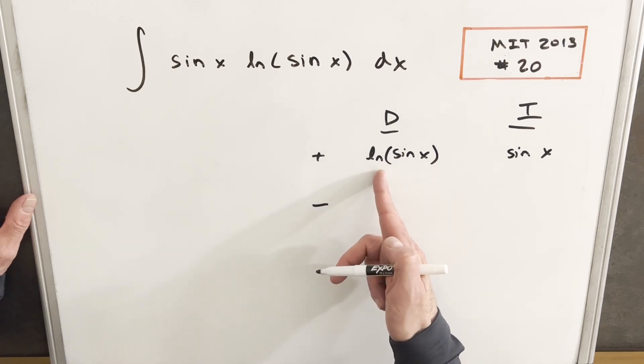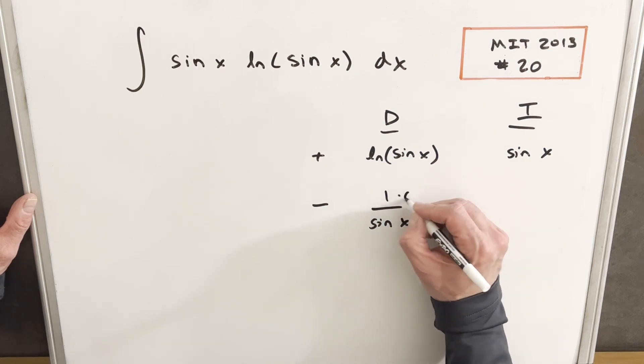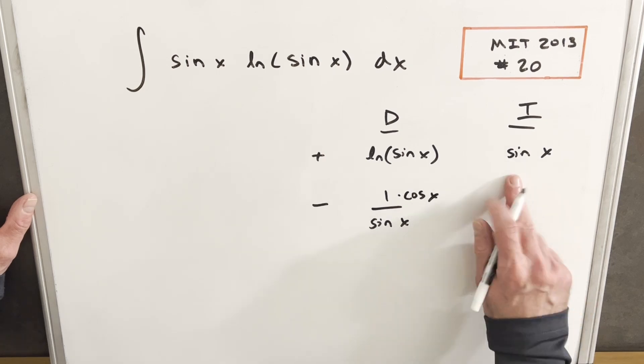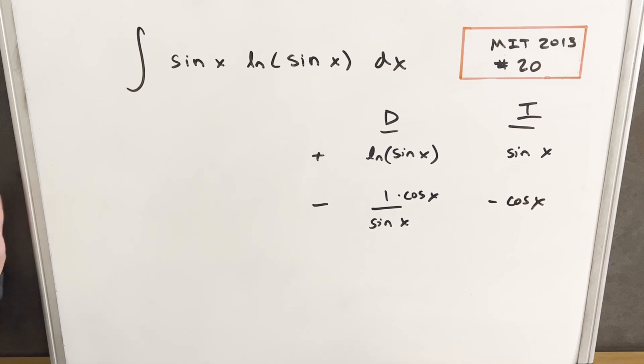So then let's differentiate natural log sine x. That's going to be 1 over sine x. But then we need the chain rule. So the derivative of sine x is just cosine x in the numerator. And then here, our integral of sine x is going to be just minus cosine x.